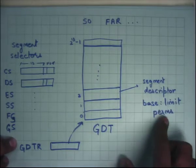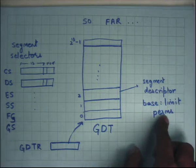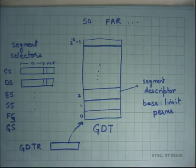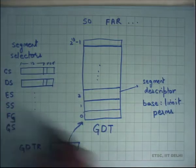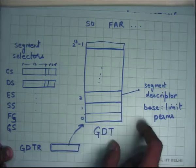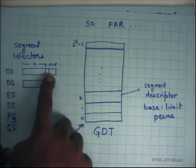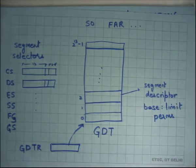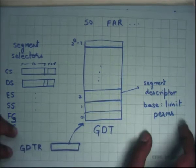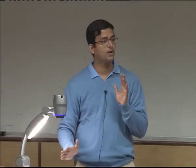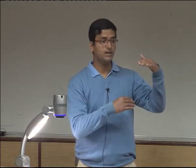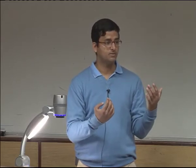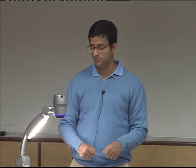Each segment descriptor has a base and limit, and also permissions specifying at which privilege level you are allowed to go through that segment. The privilege level is determined by the lowest two bits of the CS register. If the lowest two bits are zero, you are executing in privileged mode and can access any configured segment descriptor. If it's three, you can only dereference segment descriptors with permission set to three — unprivileged. This allows every process to have a private address space, with the OS having its own protected address space. The compiler or linker does not need to worry about where the process will actually get loaded.